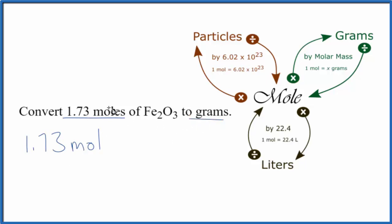So when we go from moles to grams, we have our moles in the center here, here's our grams. To go from moles to grams, we're going to multiply by the molar mass. So we have to find the molar mass of Fe2O3.